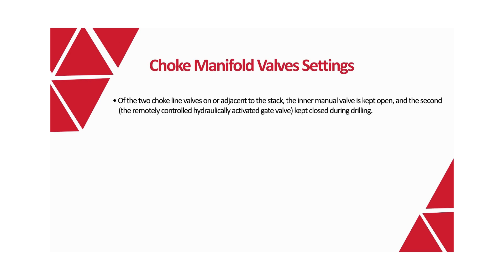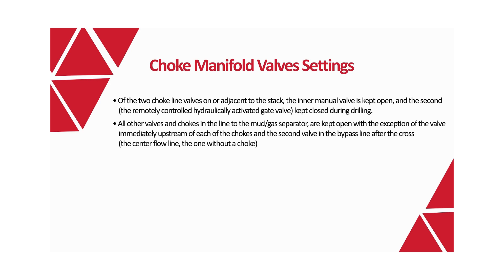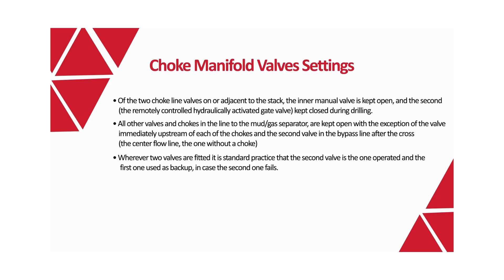Regarding choke manifold valve settings: of the two choke line valves on or adjacent to the stack, the inner manual valve is kept open and the second — the remotely controlled hydraulically activated gate valve — is kept closed during drilling. All other valves and chokes in the line to the mud or gas separator are kept open, with the exception of the valve immediately upstream of each choke and the second valve in the bypass line after the cross. Where two valves are fitted, the second valve is the one operated and the first is used as backup in case the second one fails.